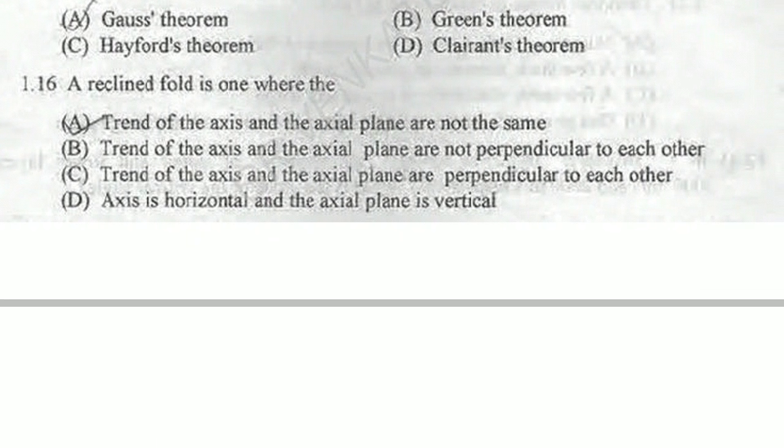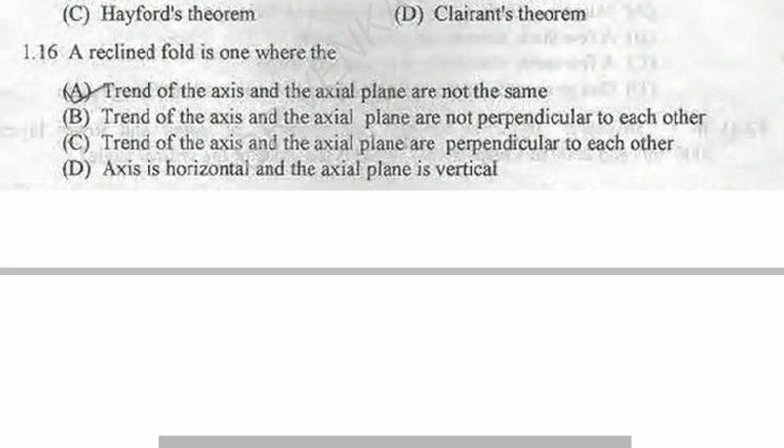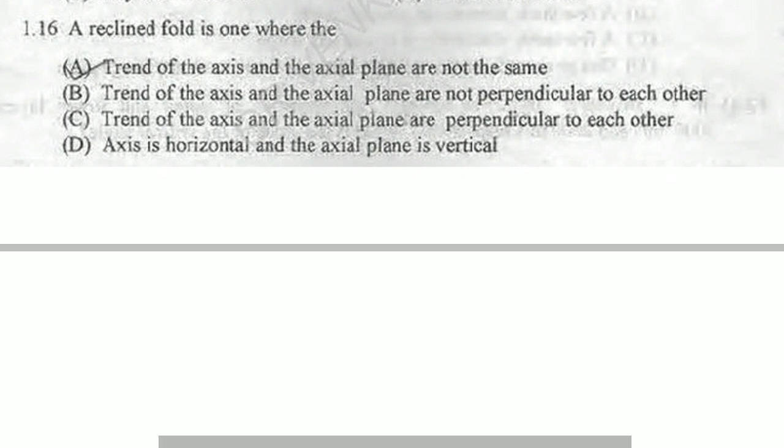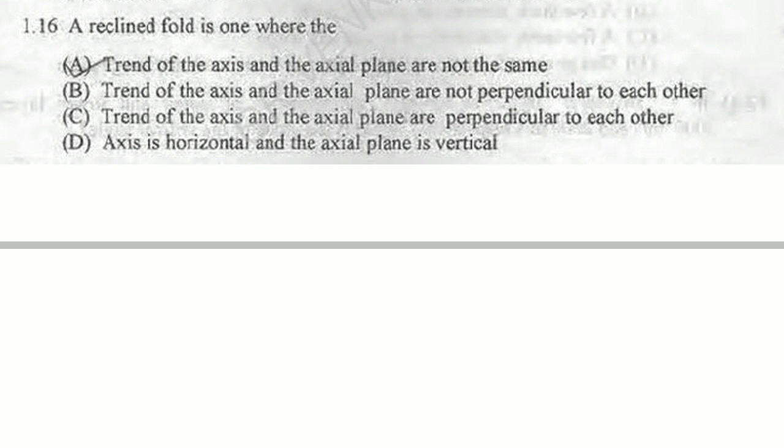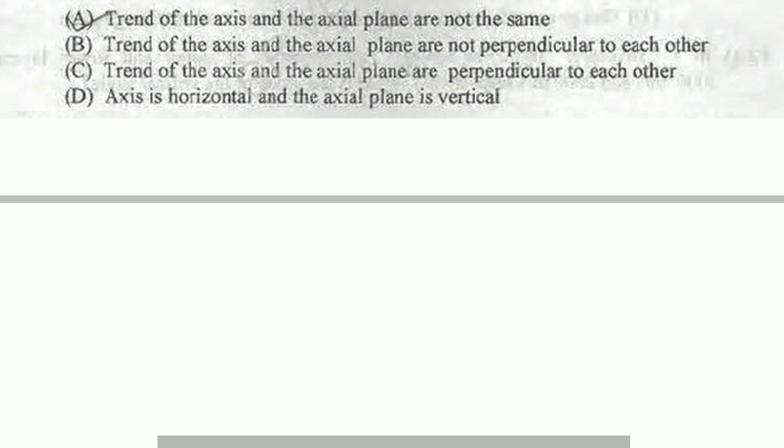Next question: a reclined fold is one where the trends of the axis and the axial plane are not the same. In this, the trends of the axis and axial plane are not perpendicular to each other. The first option is the appropriate answer. You can find this in R.G. Park, NW Gokhale, or the Ramsay classifications books.